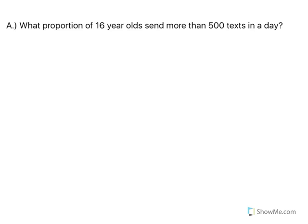So we will start with letter A, the proportion of 16-year-olds who send more than 500 texts in a day. We need to start with our z-score. Remember, the z-score is x minus the mean over the standard deviation. The reason we need a z-score is so we can standardize our data and we can use our table to find probability.